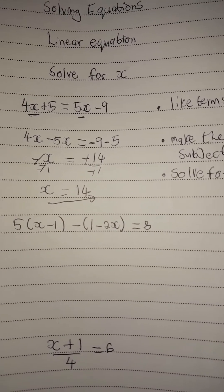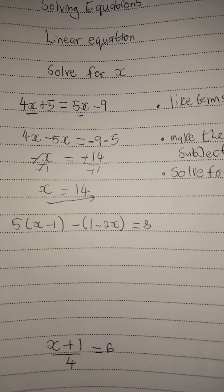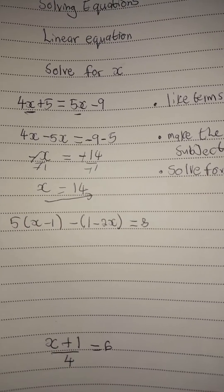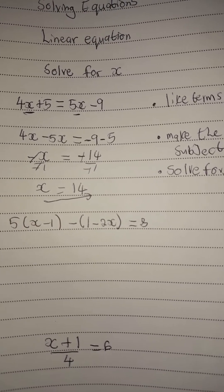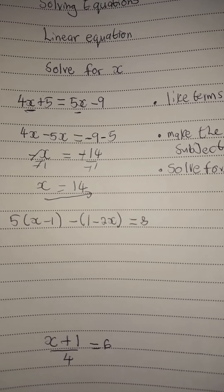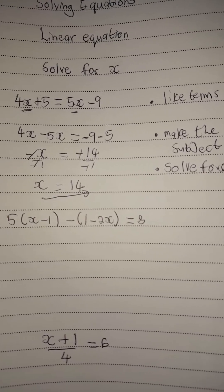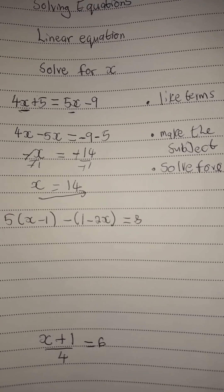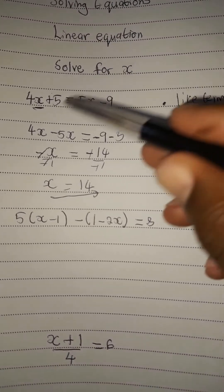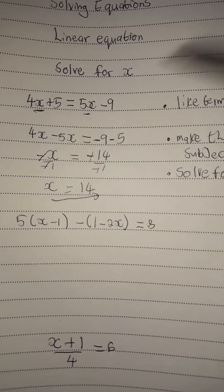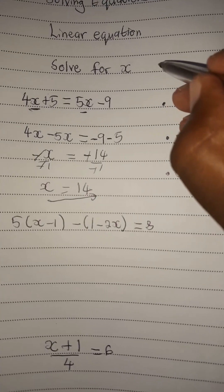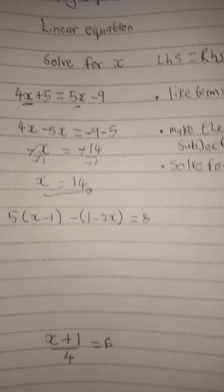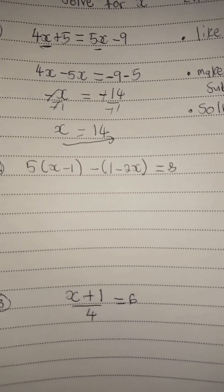So if you can check from the left-hand side, go back where there is x and place 14. When you say 14 times 4 plus 5, you get 61 from the left-hand side. Similarly, 5 times 14 minus 9, we get 61. That's how we can be sure that the linear equation is correct. Always ensure that the left-hand side equals the right-hand side — very important when solving a linear equation.